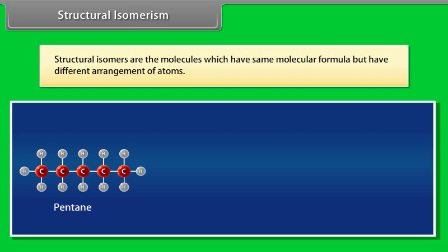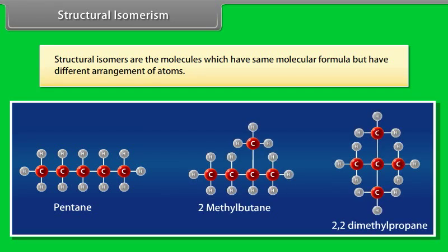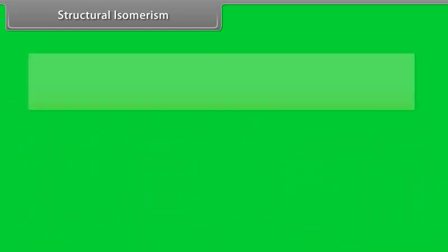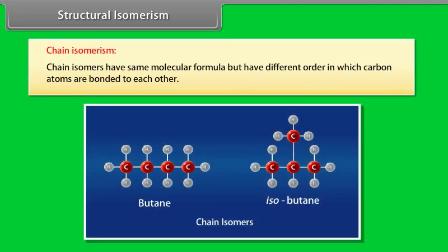Structural isomers are molecules which have the same molecular formula but have a different arrangement of atoms. Chain isomers have the same molecular formula but have a different order in which carbon atoms are bonded to each other.